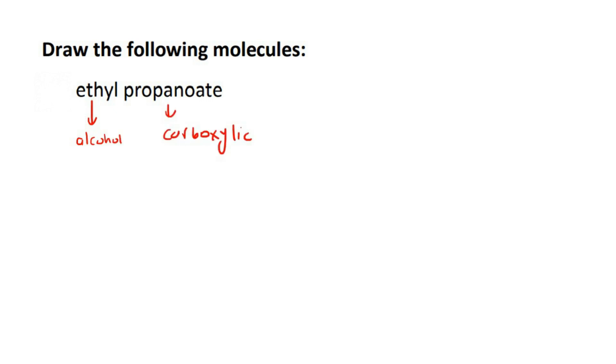So for the alcohol part, it's two carbons, that's what eth stands for. Then there's always going to be an oxygen, and then the carboxylic acid is three carbons.